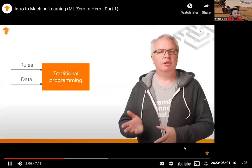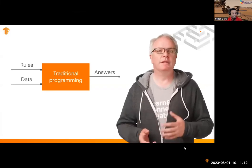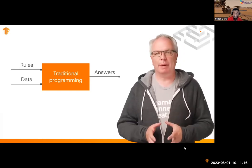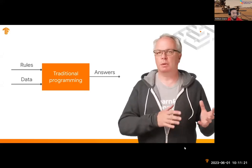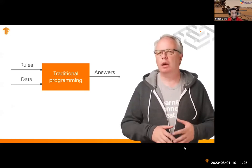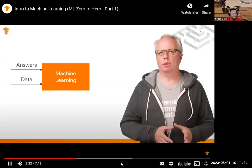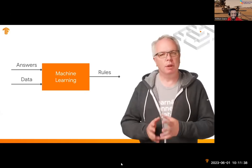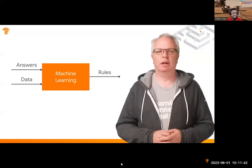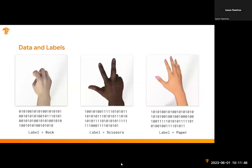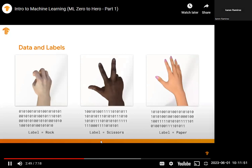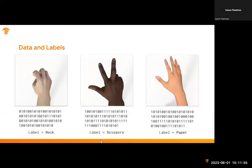What if you could have a computer learn in the same way that a human does? That's the core of machine learning and the path to artificial intelligence. Traditional programming looks like this: you have data — for example, a feed from the webcam — and you have rules that act on this data, expressed in a programming language. These rules act on the data and give you an answer: maybe it sees a rock, paper, or scissors. But what if you turn this diagram around? Instead of you as the programmer figuring out the rules, you give it answers with the data and have the computer figure out what the rules are. That's machine learning.